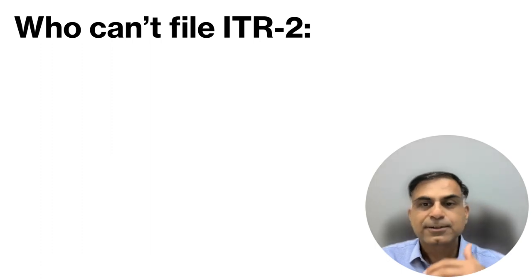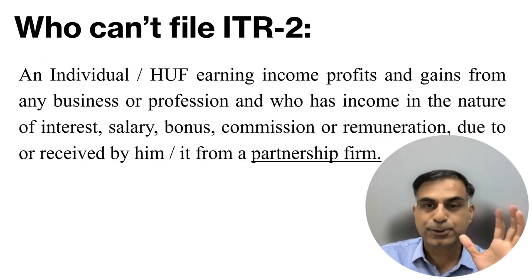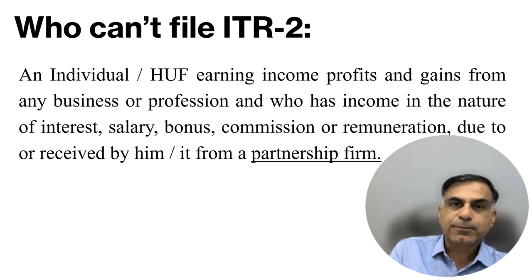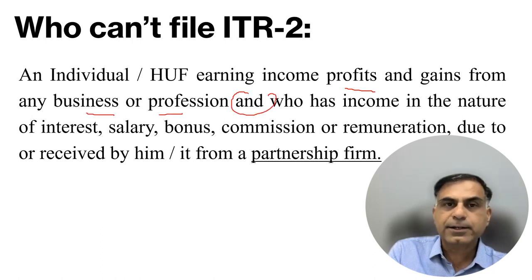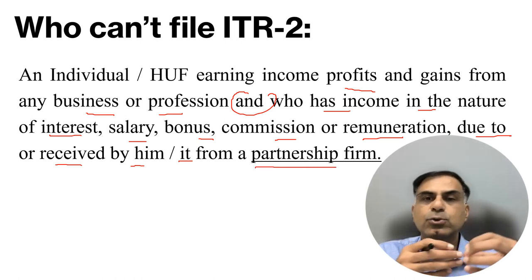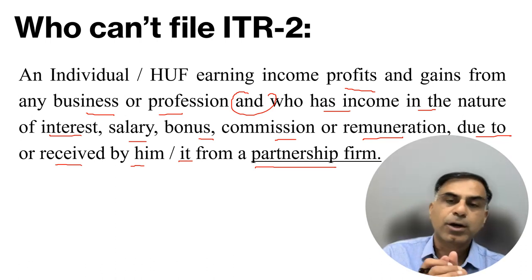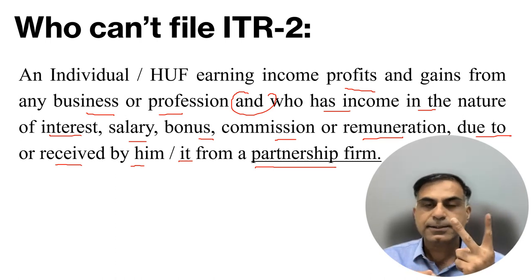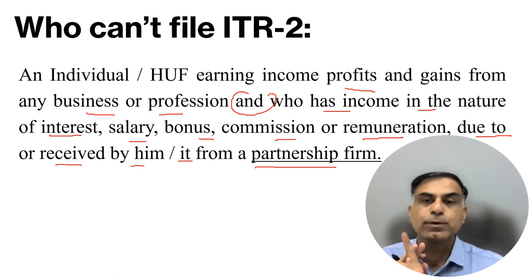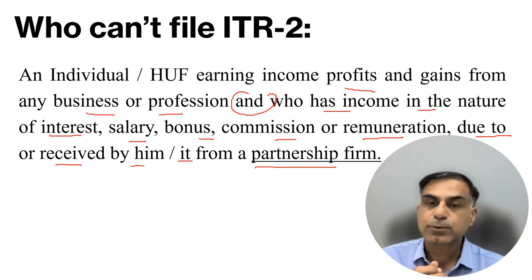Now, who cannot file ITR 2? An individual or HUF earning income from profits and gains of any business or profession, or having income in the nature of interest, salary, bonus, commission, or remuneration due to or received from a partnership firm, cannot file ITR 2. The moment you have participation in business or profession, or you are a partner in a firm receiving such payments, you are not eligible for ITR 2. If you have both salary income and business income, you must move to either ITR 3 or ITR 4.